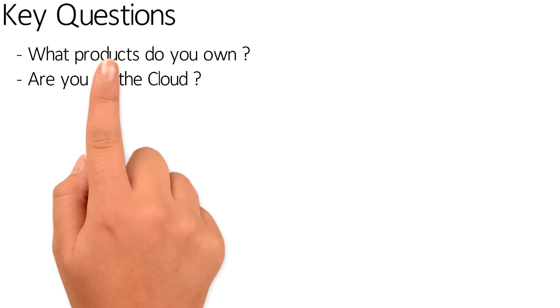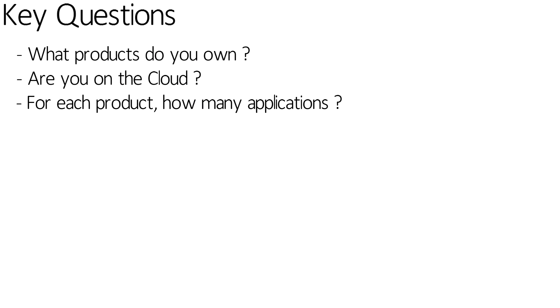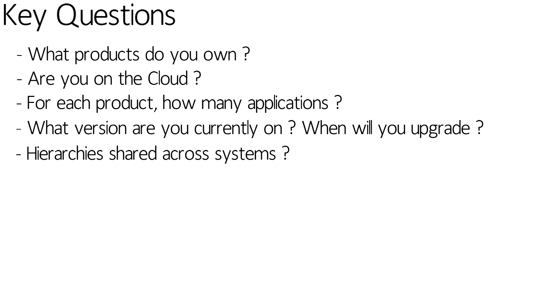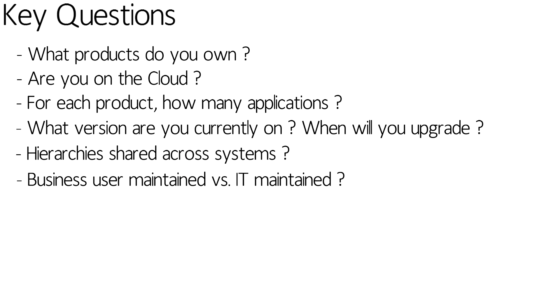You need to ask yourself: what products do I own? Am I on the cloud? For each product, how many applications do I have? What version am I on? And when am I planning to upgrade? Do I have the requirement for sharing hierarchies across systems and applications? Do my business users manage hierarchies or is IT maintaining those hierarchies? And who do I ultimately want to own that particular process?